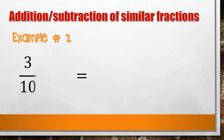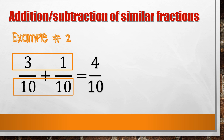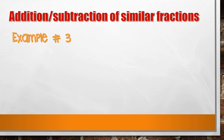Example number 2: 3/10 plus 1/10. Copy the denominator, then add the numerators. The answer is 4/10. We can simplify the fraction by dividing the numerator and denominator by the GCF, or greatest common factor. The GCF of 4 and 10 is 2. So 4 divided by 2 equals 2, and 10 divided by 2 equals 5. Therefore, 3/10 plus 1/10 equals 2/5.